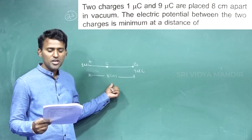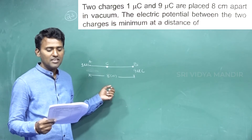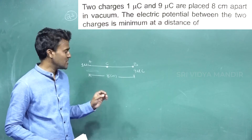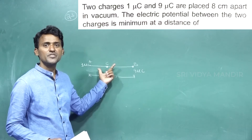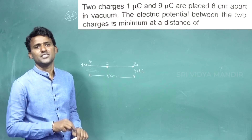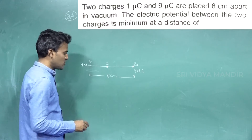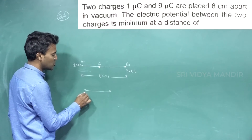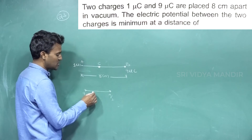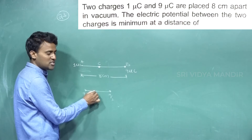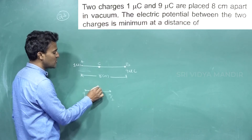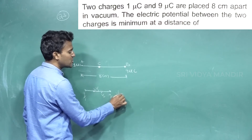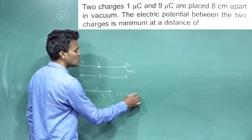The electric potential between the two charges is minimum at a certain point. For understanding, consider charge Q1 and charge Q2. At a point between them, the potential due to Q1 is V1, and due to Q2 is V2. So the total potential is V1 plus V2.